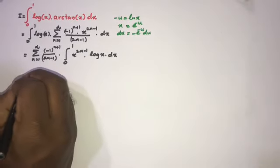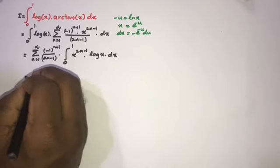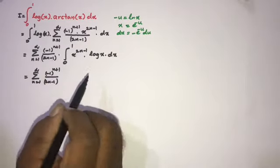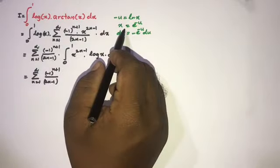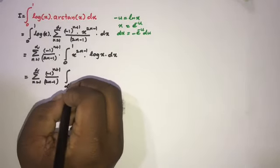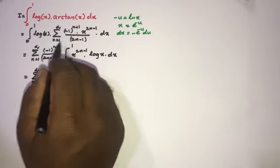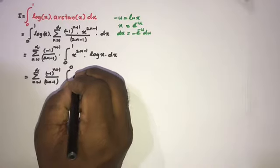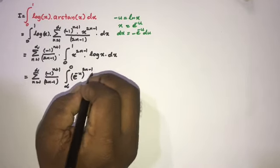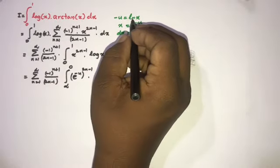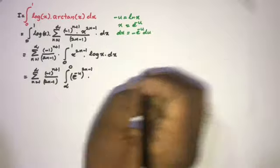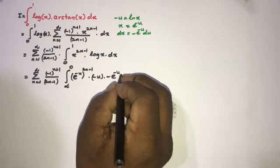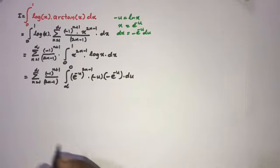Plugging in: when x approaches 0, u approaches infinity; when x approaches 1, u approaches 0. Substituting, x^(2n-1) becomes e^(-u(2n-1)), natural log of x becomes -u, and dx becomes -e^(-u) du.